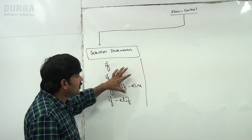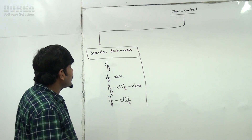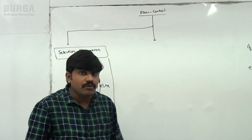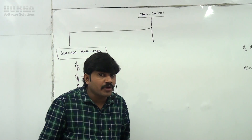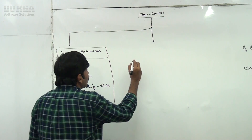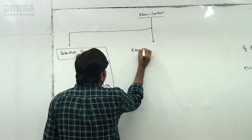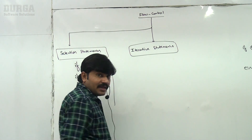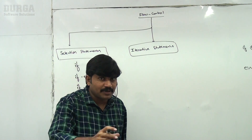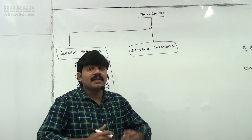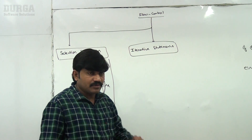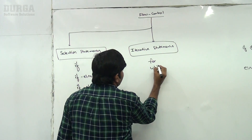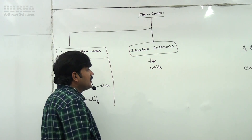The second category is iterative statements. Sometimes a group of statements need to execute repeatedly and iteratively. For loop and while loop are the two iterative statements in Python.